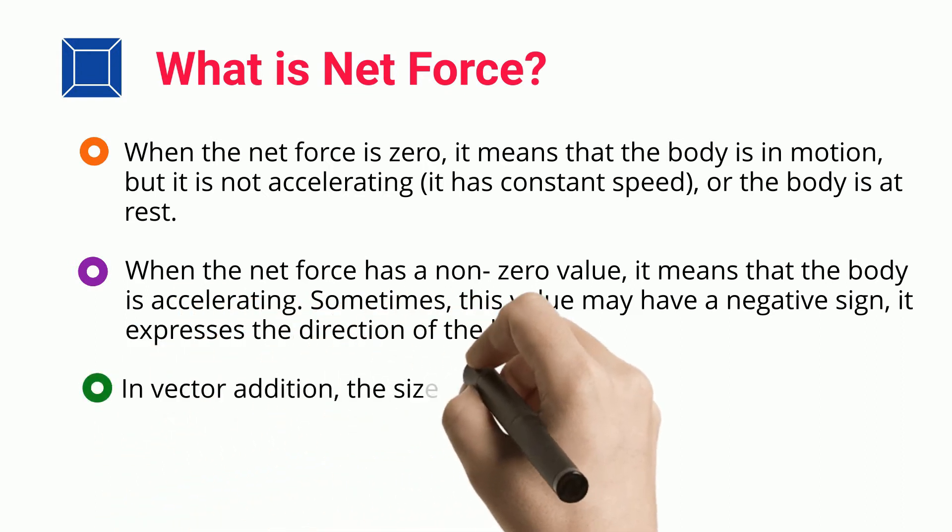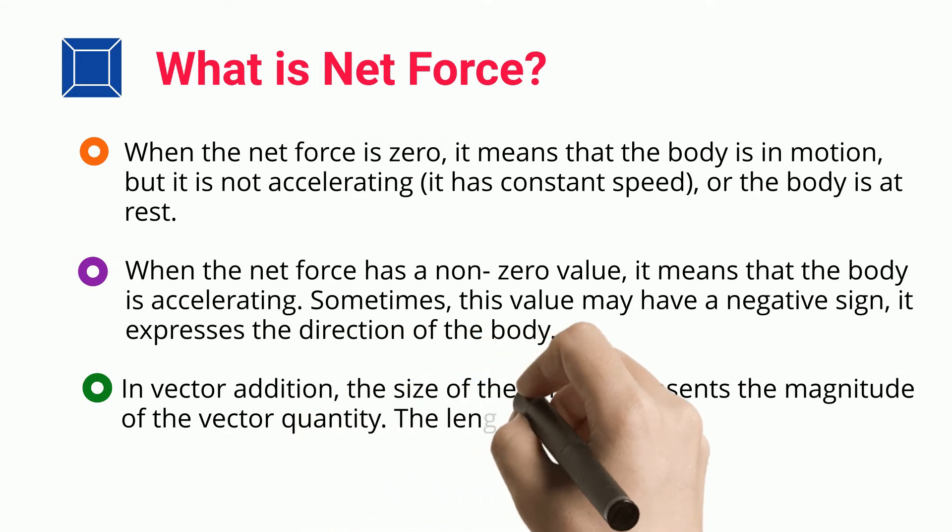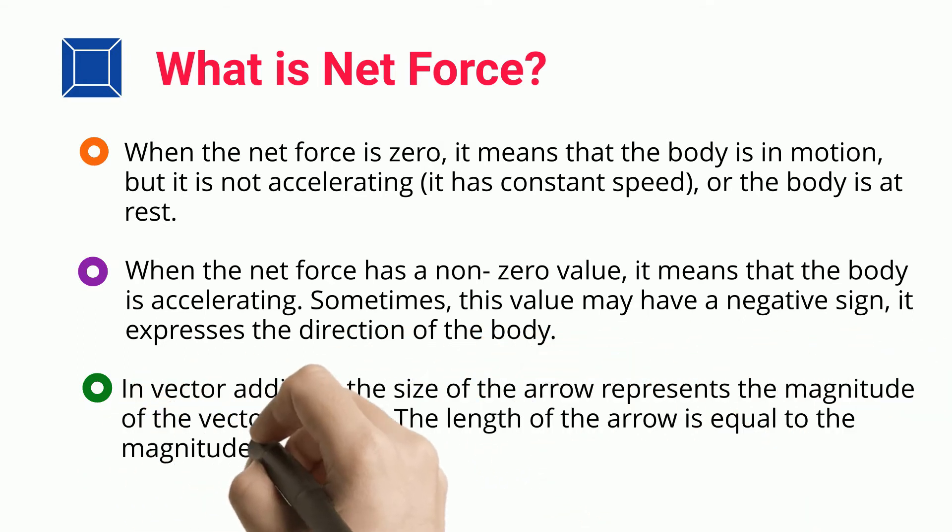In vector addition, the size of the arrow represents the magnitude of the vector quantity. The length of the arrow is equal to the magnitude of the quantity.